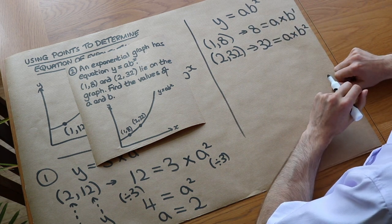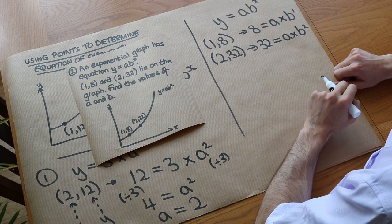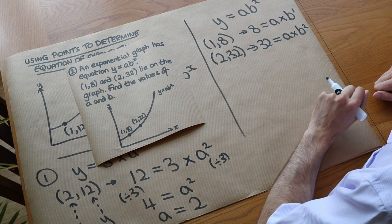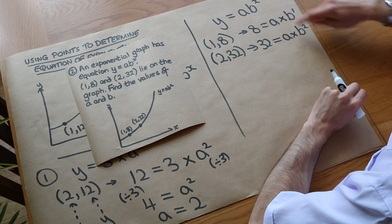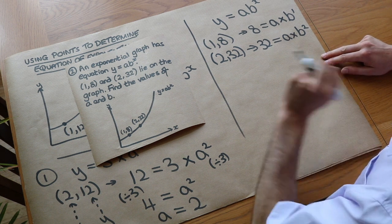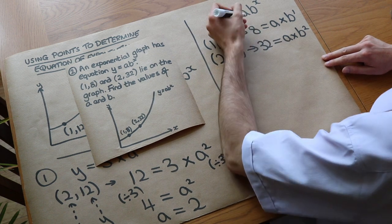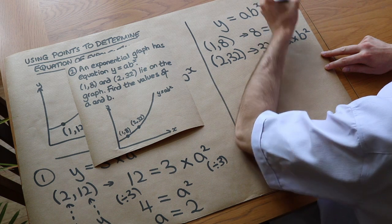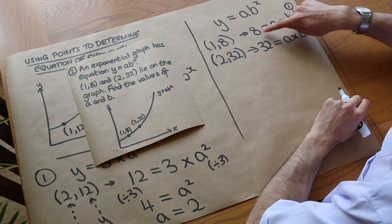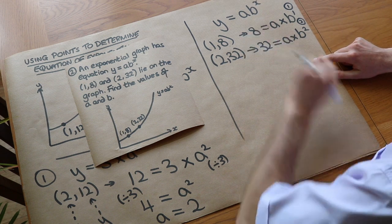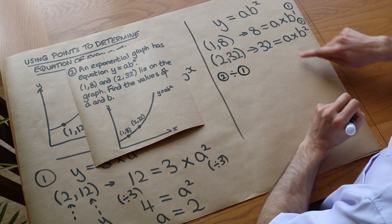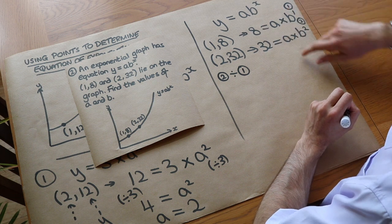You might recognise these as simultaneous equations — two equations with two unknowns. You can use substitution or elimination. When using elimination here, adding or subtracting won't work. Instead, we divide the equations. It makes more sense to divide the bigger one by the smaller one, so let's do equation 2 divided by equation 1.